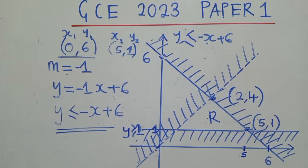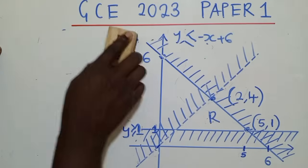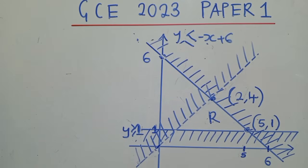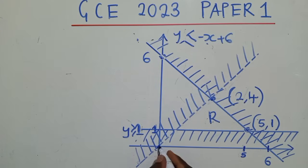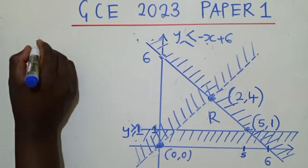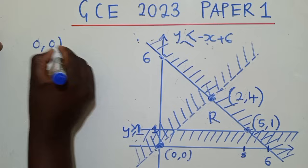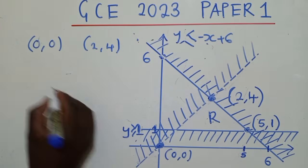So we are remaining with one more inequality. So for this inequality, hopefully you can see, it's right here. This is the inequality. So you can also identify the coordinates. Here it's 0, 0. It's passing at the origin. Here we know that it's 2, 4. So we have 0, 0. We have 2, 4. So the same idea, find the gradient.